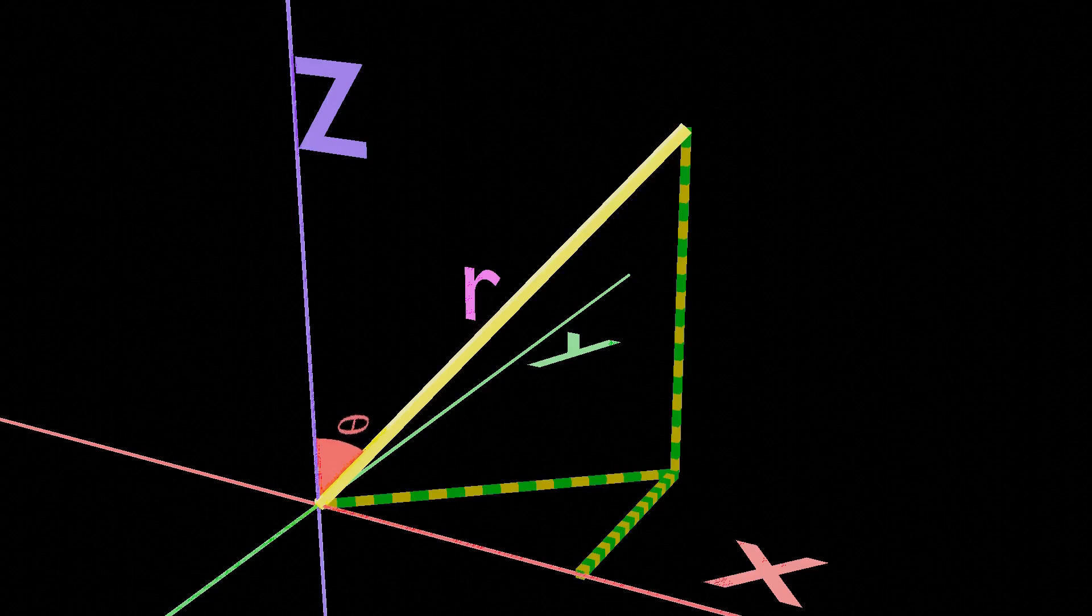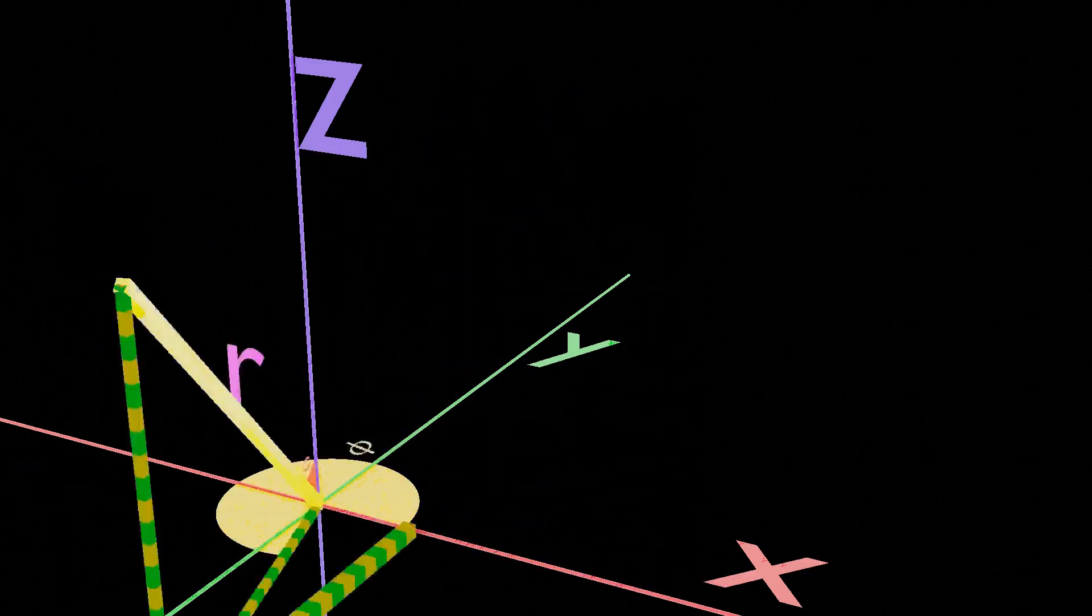The third parameter is the angle between the x-axis and the projected vector on the xy plane in the counterclockwise direction. It takes the symbol phi and ranges from 0 to 360 degrees.